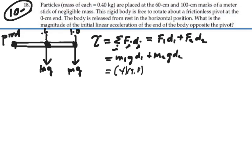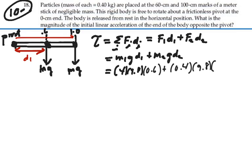And D1 is this distance here from the pivot which is 0.6 meters. So we put in 0.6 here. Mass 2 is 0.4 kilograms. And G is 9.8. And D2 is this distance from the pivot, which is 1 meter. So calculating these torques, 0.4 times 9.8 times 0.6 plus 0.4 times 9.8 is 6.27 newton meters.